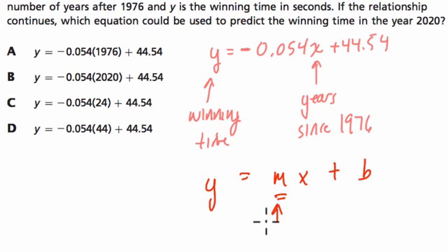m is your slope or your rate of change, and this time, since we're looking at a total winning time, this rate is saying the time is going down by 0.054 seconds each year since 1976. Isn't that cool?